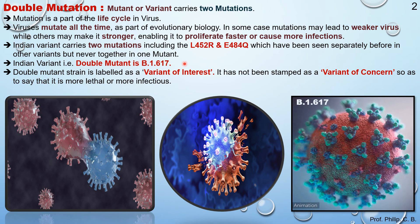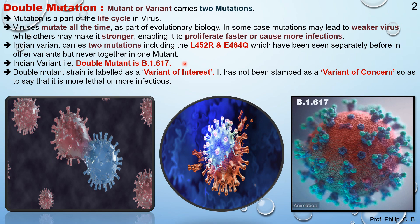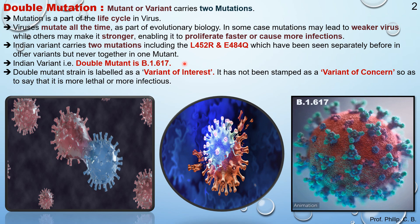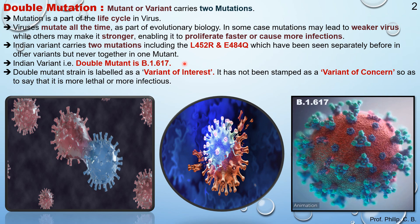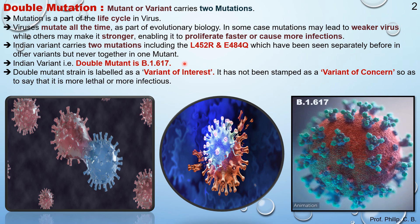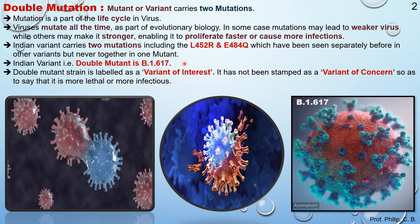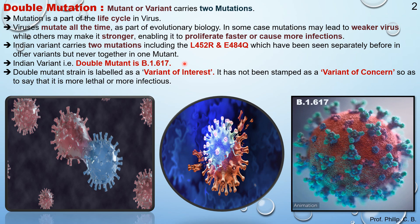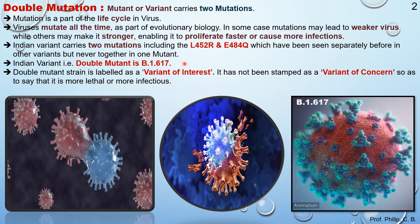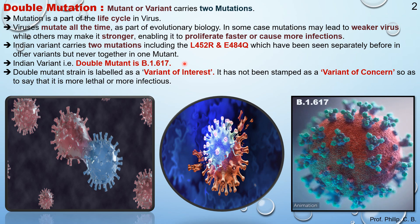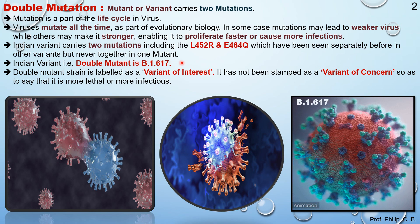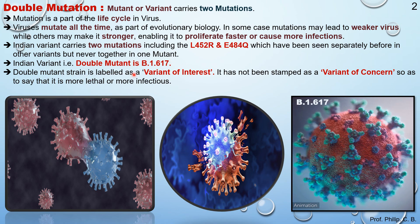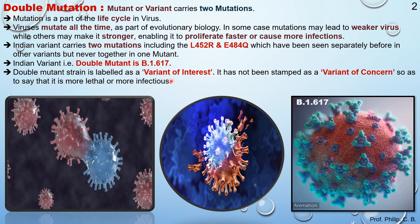This new variant is causing havoc in the present scenario — that is, in the second wave — whereas the previous L452R and E484Q mutations were causing problems in the first wave. The present double mutant is causing more severe infection and spreading faster. The double mutant strain is currently labeled as a variant of interest.